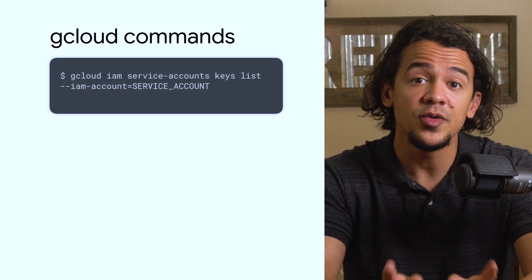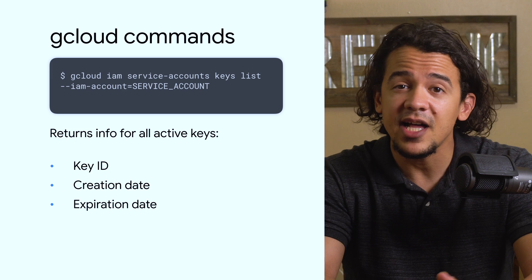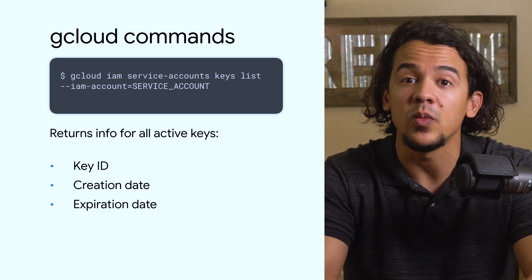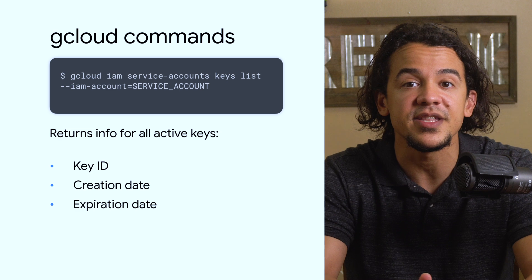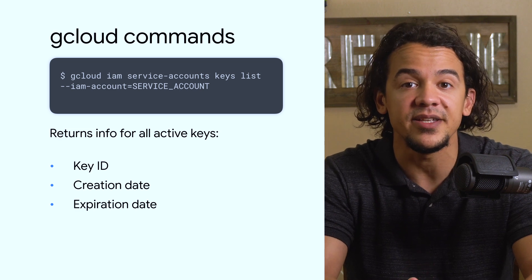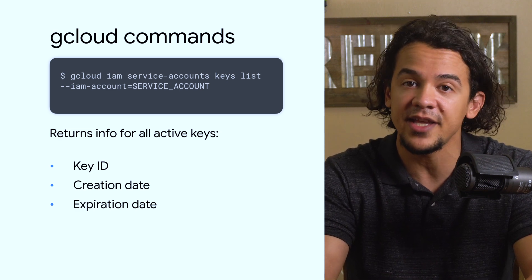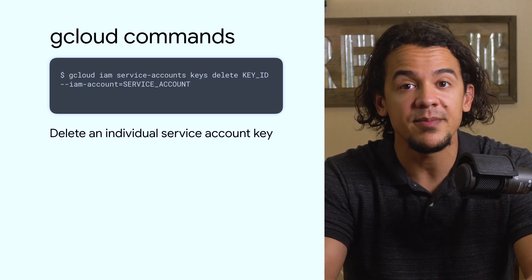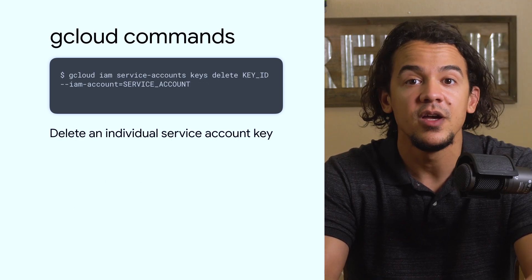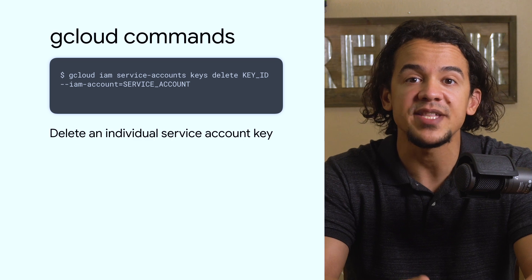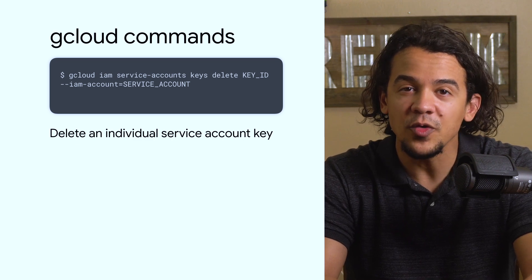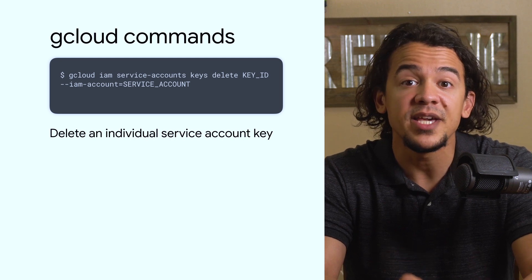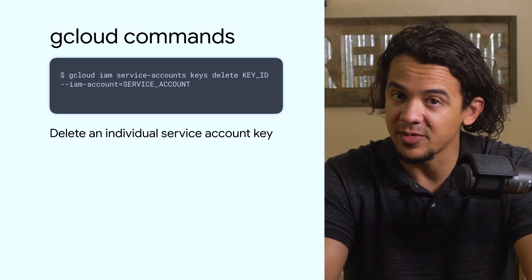When you want to delete an old key, you'll need the key's ID. `gcloud iam service-accounts keys list`, followed by the service account, will output the keys that currently exist for that service account by key ID, along with the date of creation and the date of expiration. With that, you can delete it with `gcloud iam service-accounts keys delete`, followed by the key ID from the previous output. The old key is now unusable to authenticate as your service account, but if you replace it in all the places that you need it to work, that shouldn't be a problem.